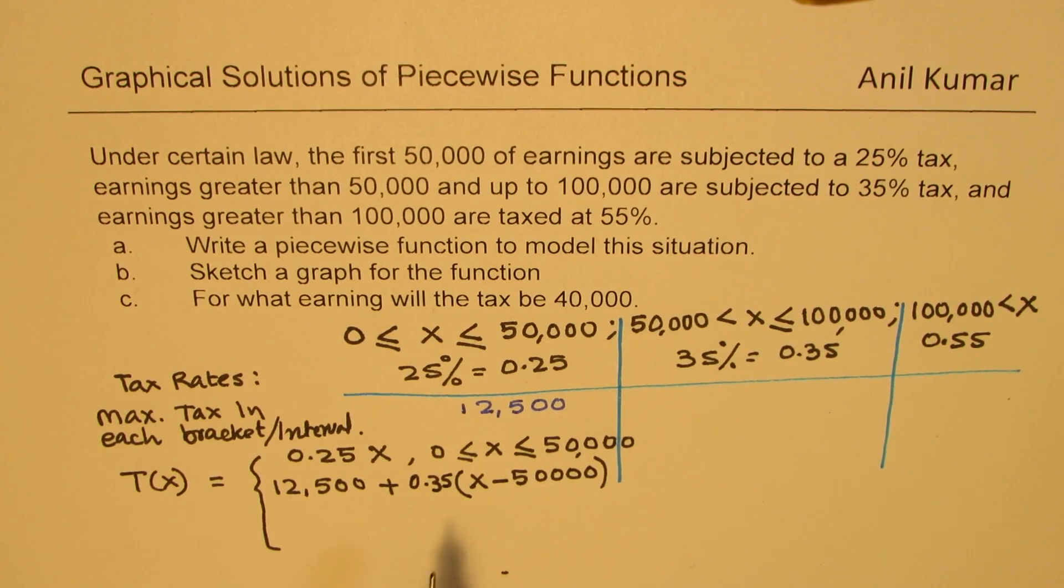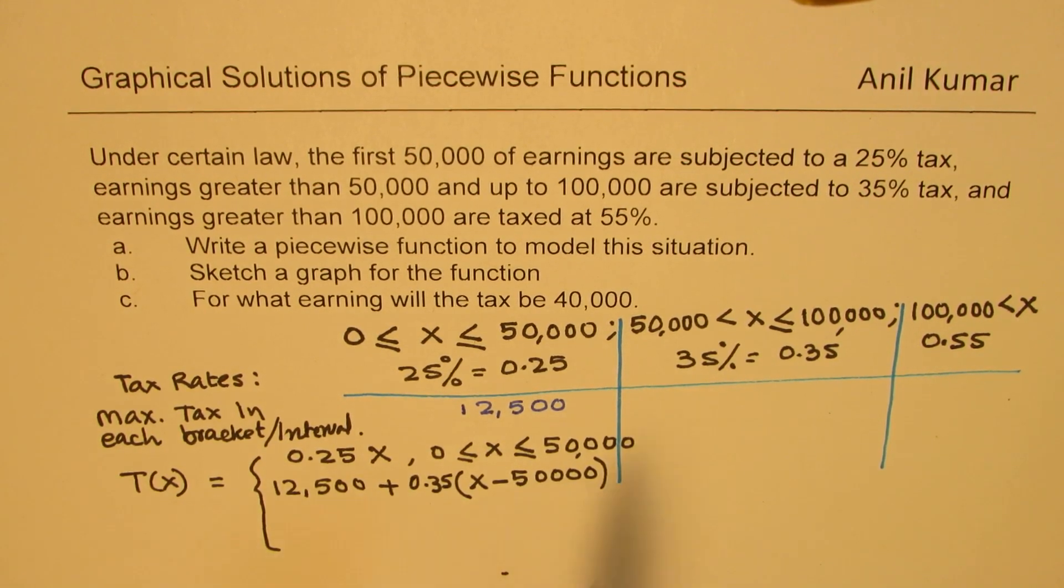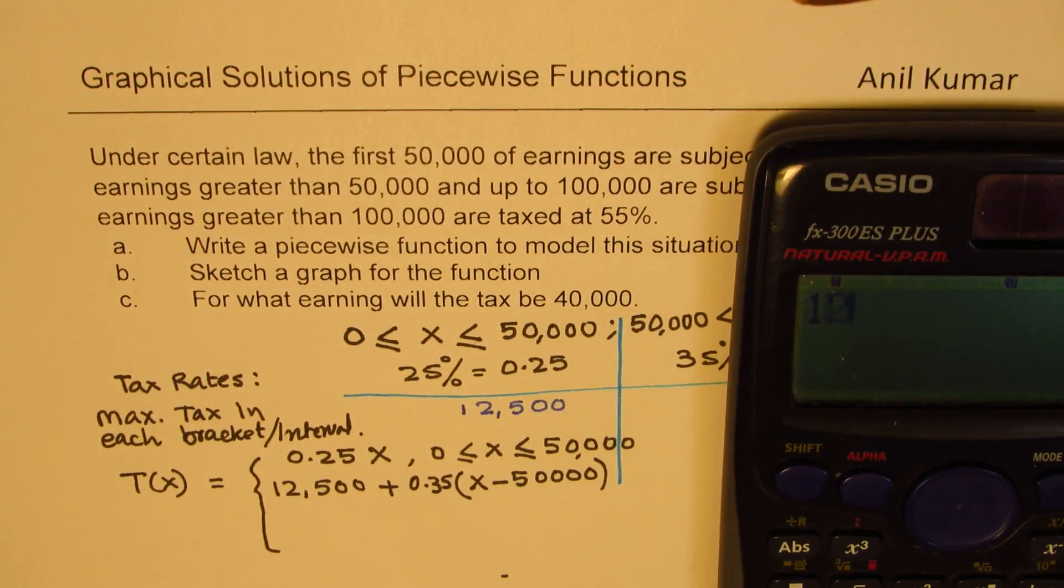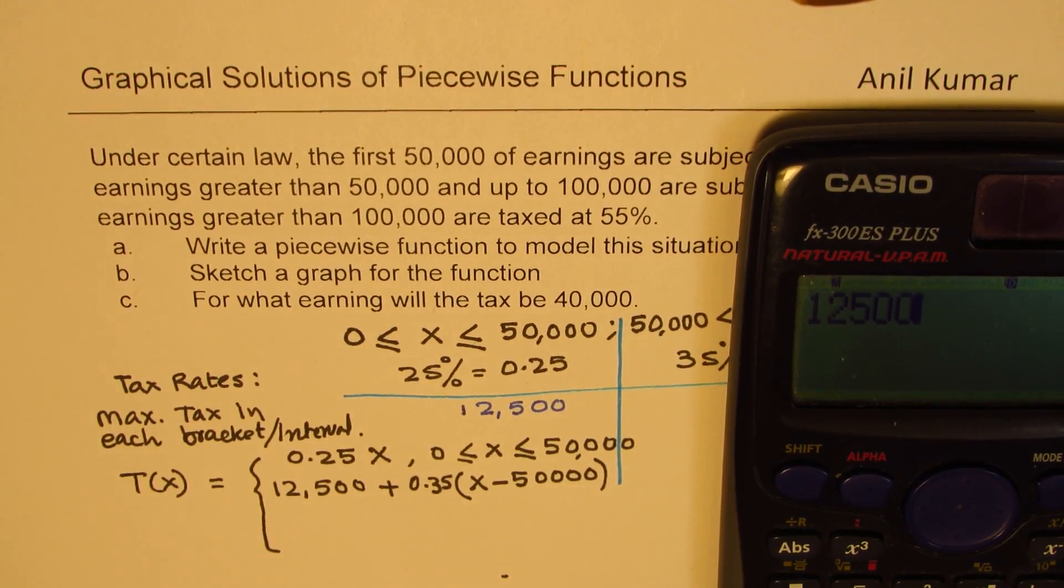That is the most critical statement here. So on the first 50,000, you pay at the rate of 25%, which is 12,500, and on balance, that means X minus 50,000, you pay at the rate of 35%. And how much maximum do you pay? We can calculate from this equation. So the maximum which we have is the limit of 100,000.